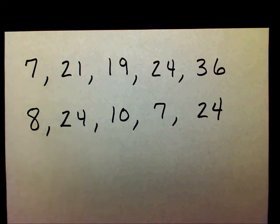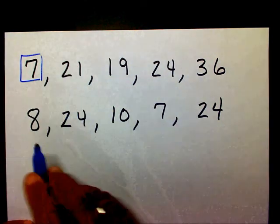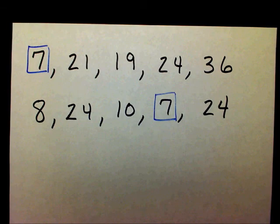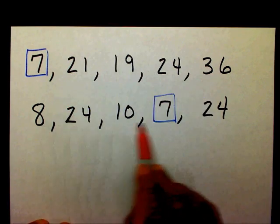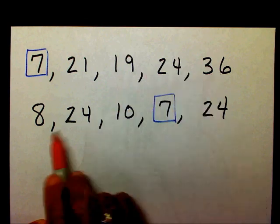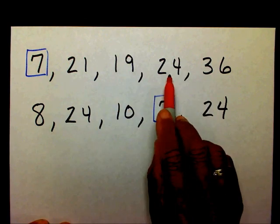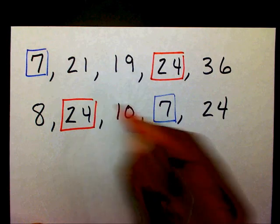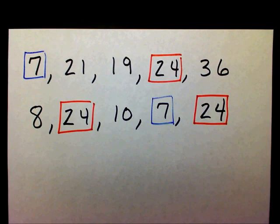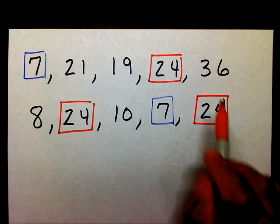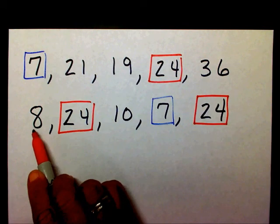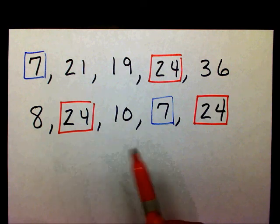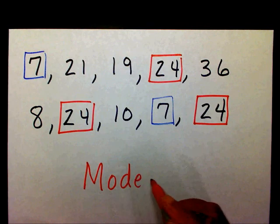Let's see which numbers appear the most. You see a 7 here and a 7 here. There's a 21 — I don't see another 21. There's a 19 — I don't see another 19. Here's a 24, here's another 24, and one more here. So there's a 24, a 24, and a 24. I only see one 36, one 8, and one 10. So therefore, my mode equals 24.